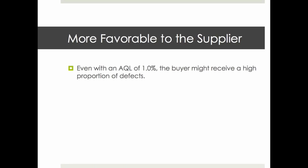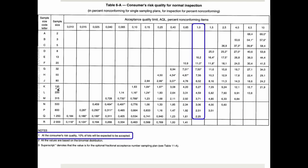Even if you set an AQL of 1%, you might still receive a high proportion of defects. For example, with a sample size of 200 pieces and an AQL of 1%, from time to time you might accept a batch that still has more than 4% of defects — even though your AQL was only 1%. That's a big difference. The standard states that 10% of lots will be expected to be accepted at the consumer's risk. From time to time, you'll get a batch you accept even though there are way too many defects.